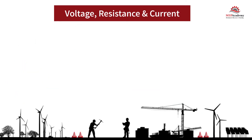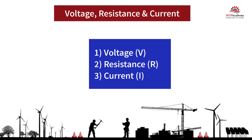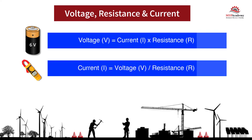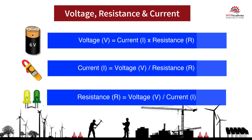We can calculate any of the three factors that make up Ohm's Law if we have any two of the factors. Here are the three versions of the formula: Voltage equals Current times Resistance; Current equals Voltage divided by Resistance; and Resistance equals Voltage divided by Current.